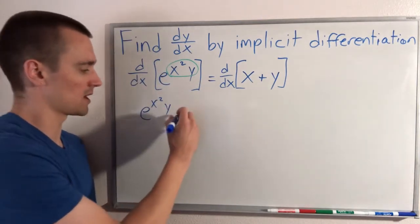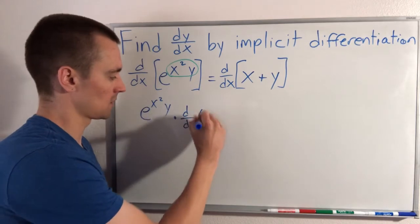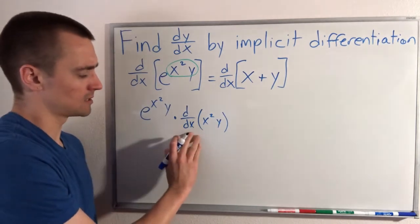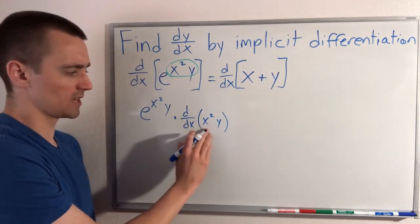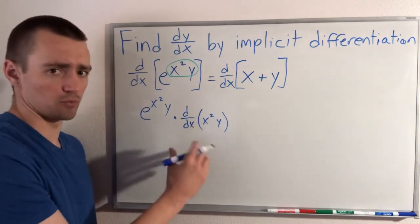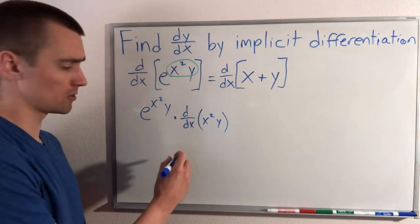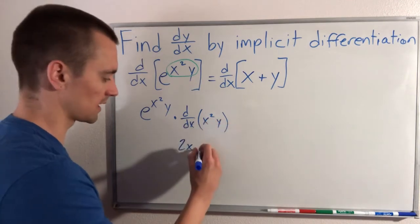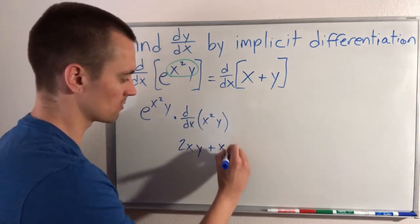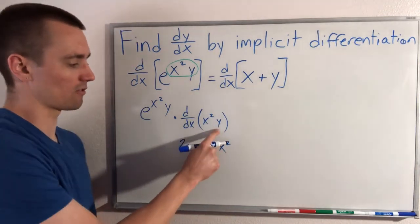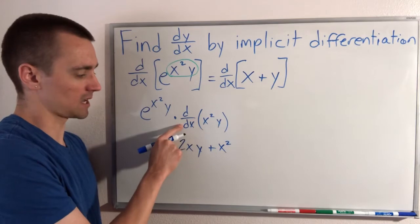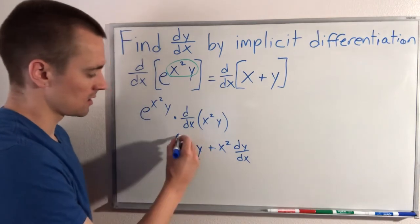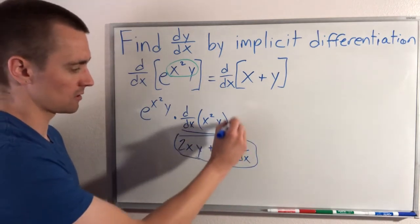By chain rule, we need to multiply by the derivative of the inside, which is x squared y. To find the derivative of x squared y, we're going to have to do product rule. Product rule says we do the derivative of the first piece, which is 2x, times the second, plus the first piece left alone times the derivative of the second. The derivative of y with respect to x is just dy/dx.